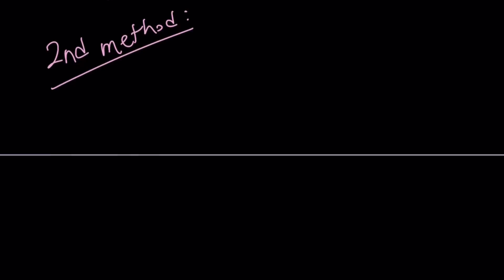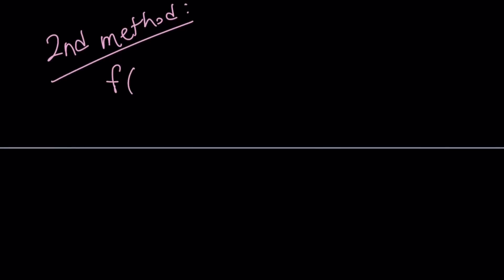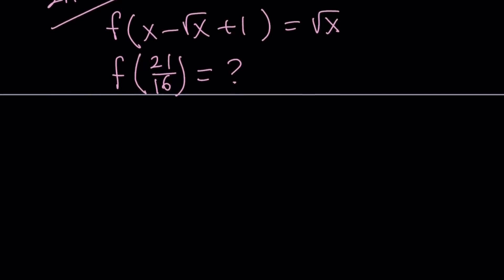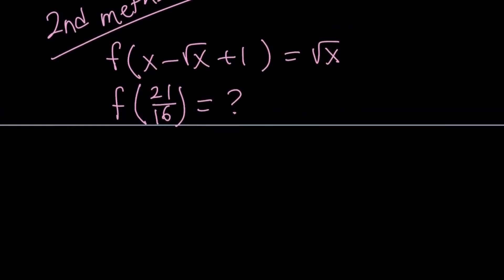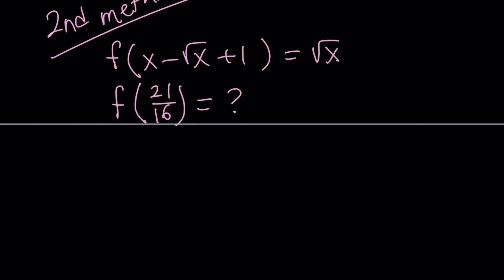So to rewrite the equation, we are given f of x minus square root of x plus 1 equals square root of x. And I'm pretty sure you thought about this method first, because first method was kind of very brute forcey. And I know some people find it unnecessary, but I just wanted to walk you through the process. So directly think about this: I want to find f of something, and I have f of something, right?